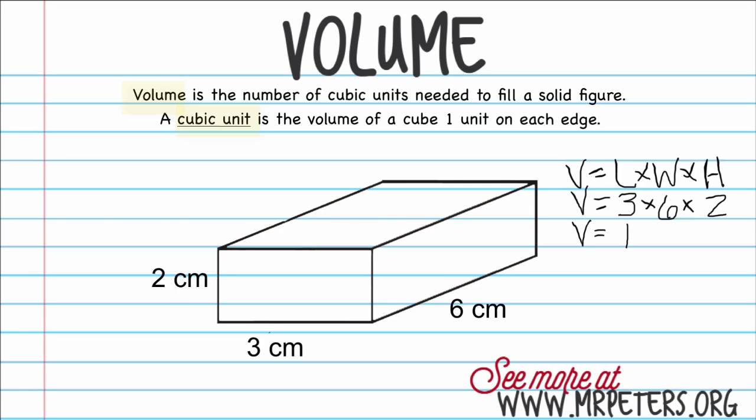Again, we want to break this down one problem at a time. So three times six is eighteen times two. Eighteen times two is thirty-six, so our answer to this one is thirty-six centimeters cubed. That would be our volume: thirty-six centimeters cubed.